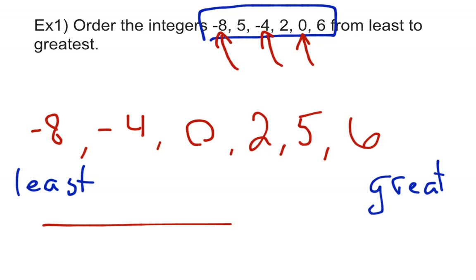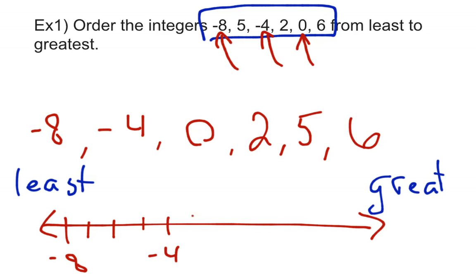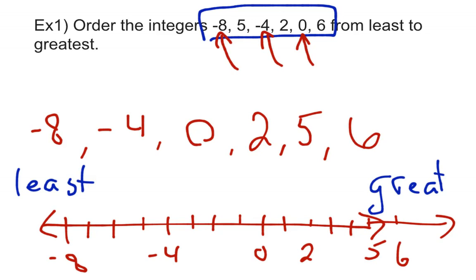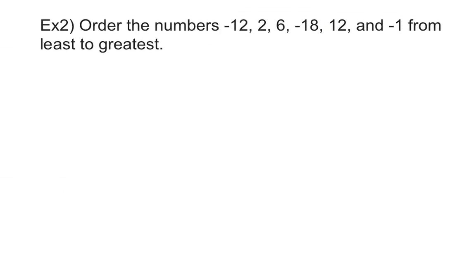Your final answer should look like a number line. Starting from negative eight, then negative seven, negative six, negative five, negative four, negative three, negative two, negative one, zero, one, two, three, four, five, and six. It's nice to picture the number line to help get them in order. You don't have to draw it, but visualizing it helps.